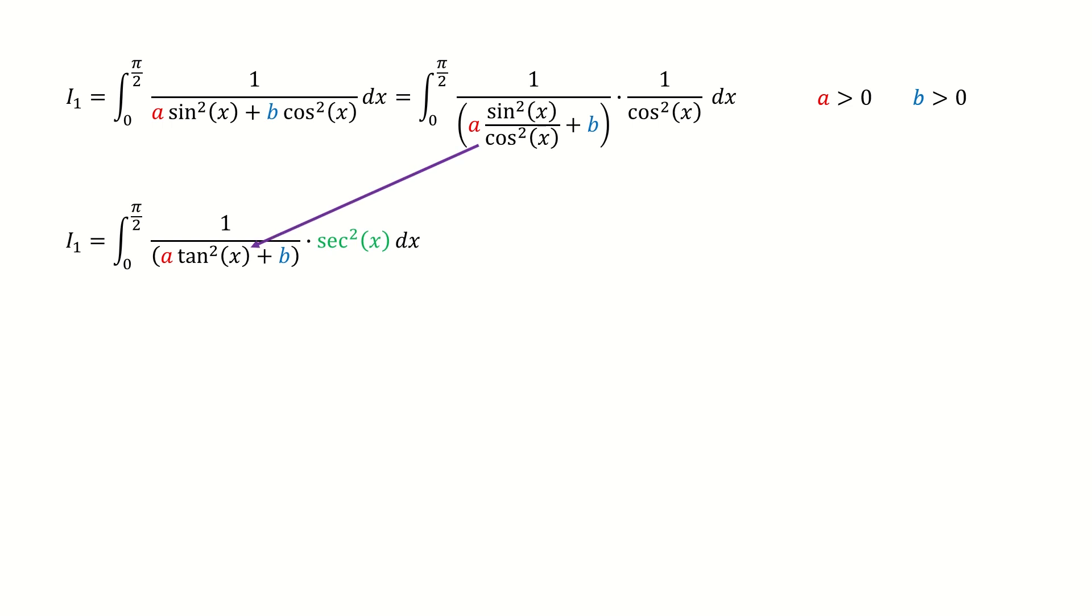The sine square over cosine square is tangent square, and 1 over cosine square is secant square.